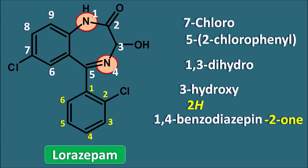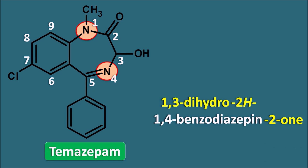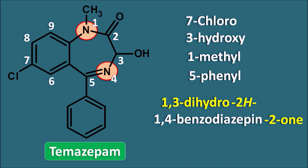Next is temazepam, which is like oxazepam with an extra methyl group at position 1. Root name: 1,4-benzodiazepine-2-one with 1,3-dihydro and 2H attached to it. Groups: 1-methyl, 3-hydroxy, 5-phenyl, 7-chloro. Arranged alphabetically: 7-chloro, 3-hydroxy, 1-methyl, 5-phenyl. The full IUPAC name of temazepam is: 7-chloro-3-hydroxy-1-methyl-5-phenyl-1,3-dihydro-2H-1,4-benzodiazepine-2-one.